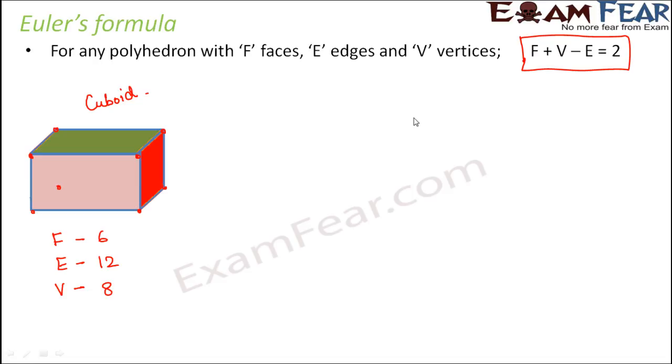So let's apply this formula that is F plus V minus E. So that will be equal to 6 plus 8 minus 12. So 6 plus 8 is 14 minus 12. That is equal to 2. That means this relation holds true for a cuboid. So cuboid is a polyhedron. Yes.